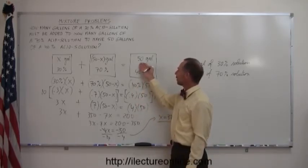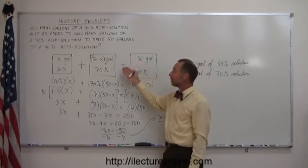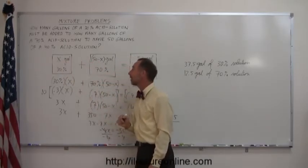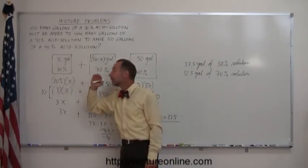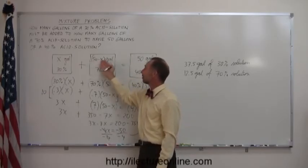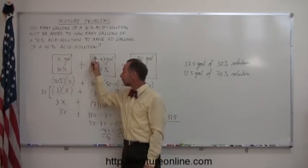They tell you that you end up with a 50-gallon mixture, they don't tell you how much of each of these two mixtures you have to add, so you let x be the amount for the one, and the total 50 minus x be the amount for the other. When you multiply them together,